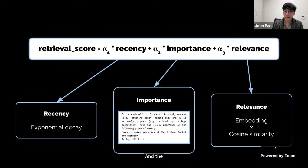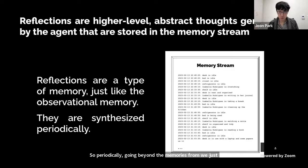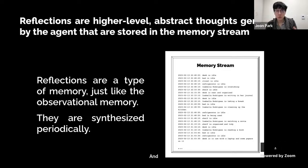Periodically, going beyond the memory stream, we synthesize clusters of records in the agent's memory stream into higher-level abstract thoughts called reflections. Importantly, once synthesized, these reflections are just a type of memory — they are stored in the memory stream just like observational memories.